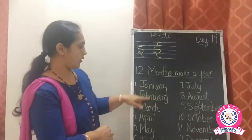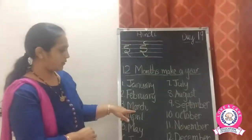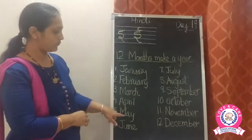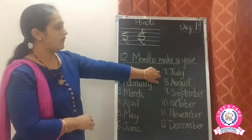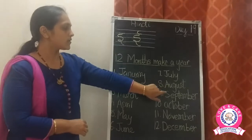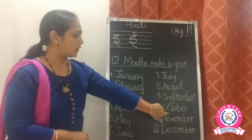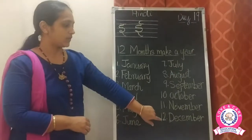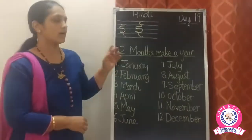One — January, two — February, three — March, four — April, five — May, six — June, seven — July, eight — August, nine — September, ten — October, eleven — November, and the twelfth month is December. So the 12 months make a year.